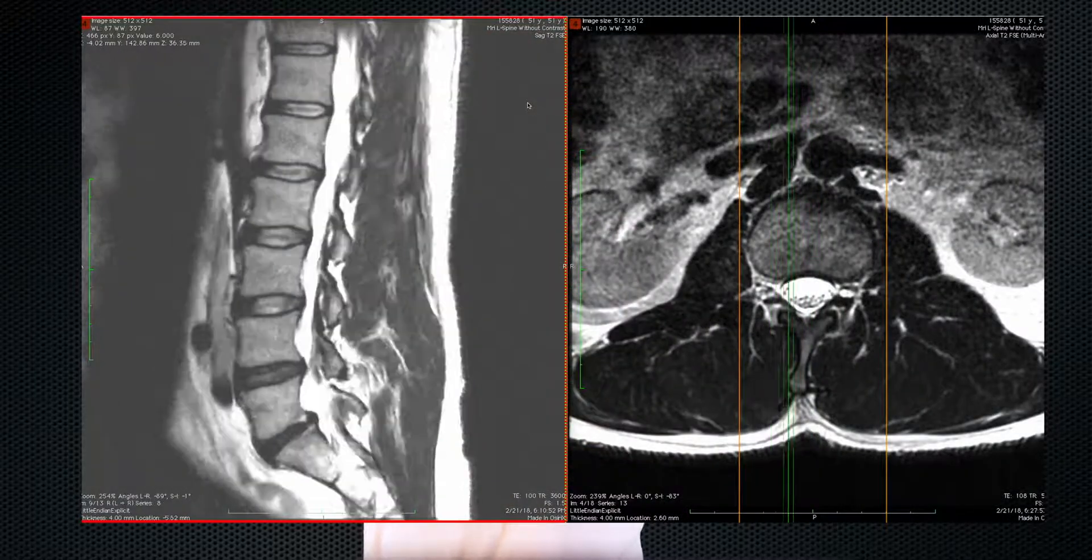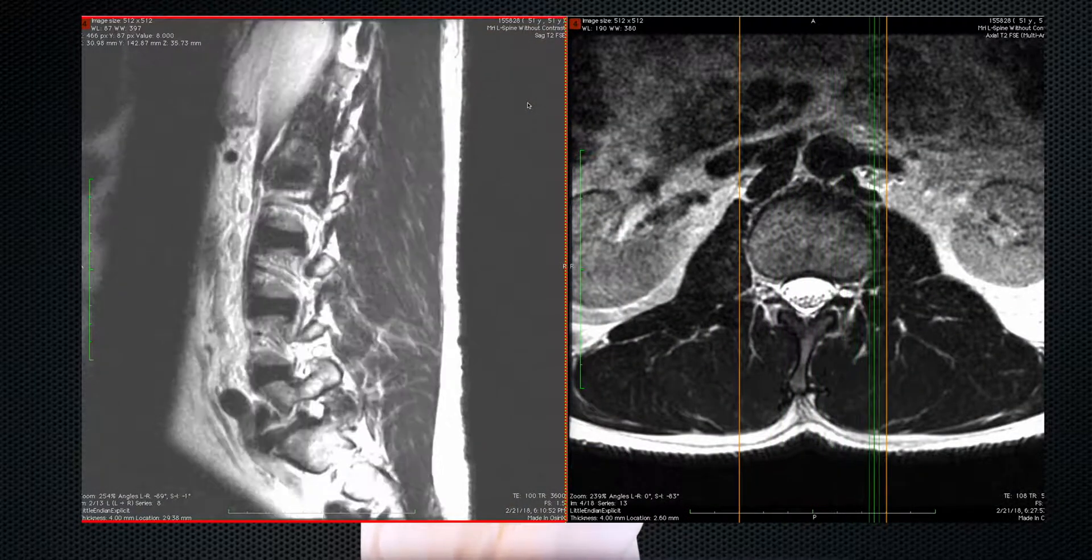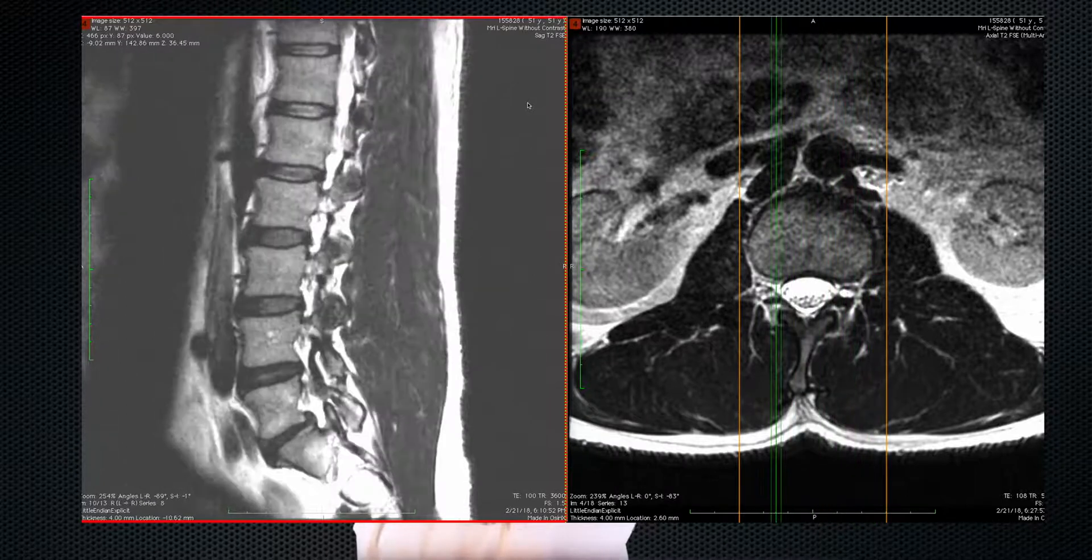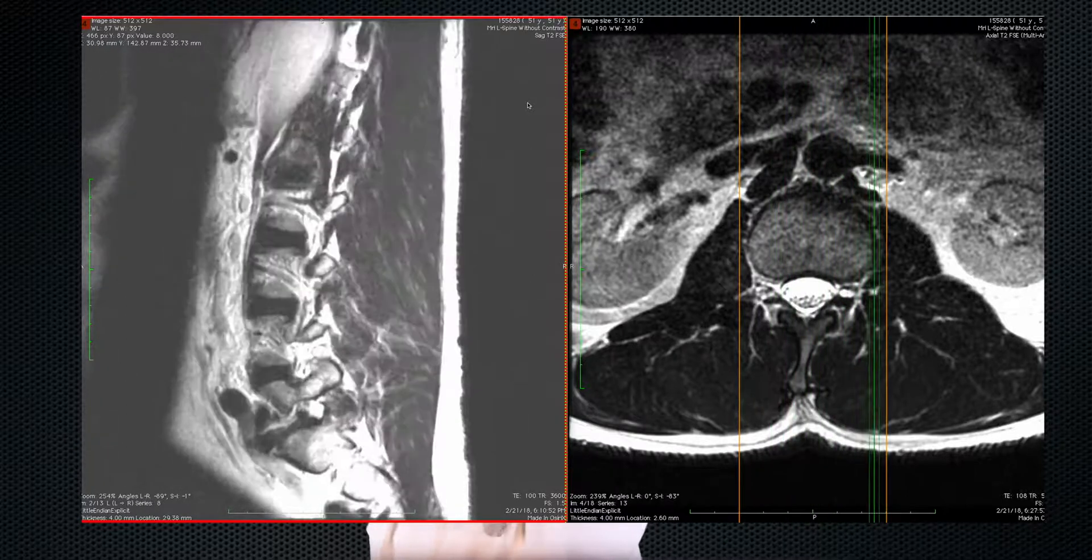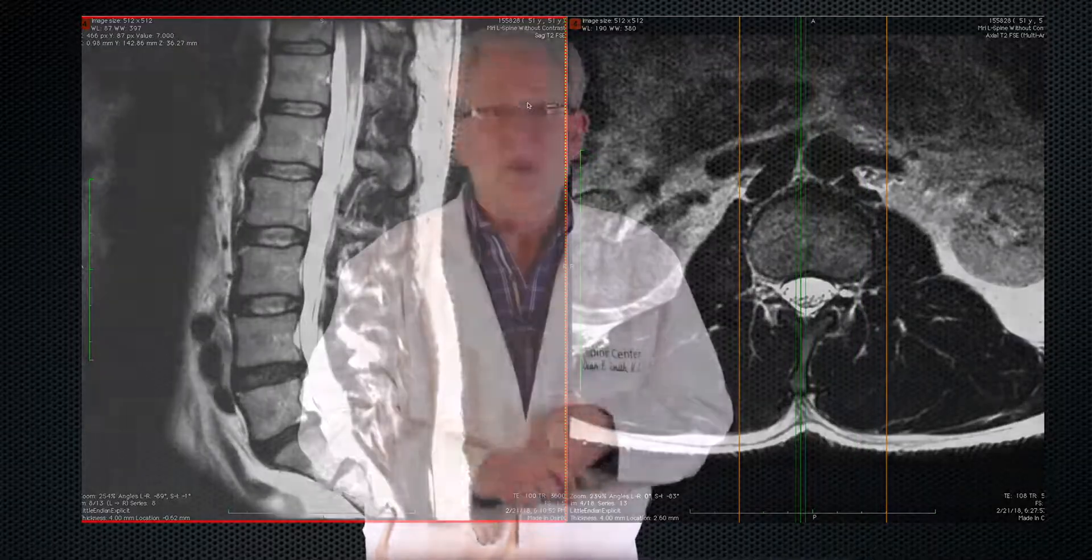MRI studies are used because it is really the only study that we have that allows us to look directly at the nerves. We can see if the nerves are being pinched, which side is being pinched. We can see if we have herniated discs at other levels, and we can see spinal stenosis.